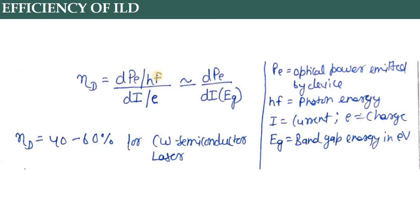Formula में देखें तो ηd = (dPe/hf) / (dI/e), जहाँ Pe optical power emitted है जो device से मिल रही है, और dI injection current का change है। साथ में एक balance करता है हमारा band gap, क्योंकि band gap पर जो energy है वो loss हो रही है। एक continuous wave semiconductor laser की यह differential external quantum efficiency around 40-60% होती है - यह एक typical value है।